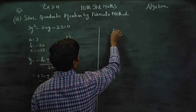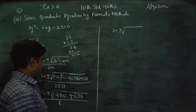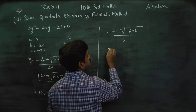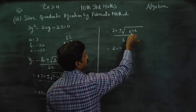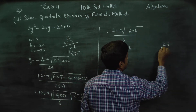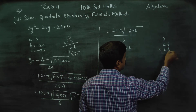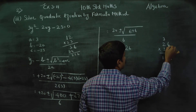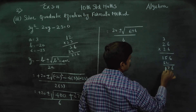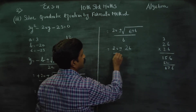At the next stage: 20 plus or minus square root of 676, divided by 6. Now 676 is a perfect square — 26 times 26 equals 676 — so the square root of 676 is 26. This gives us 20 plus or minus 26, divided by 6.